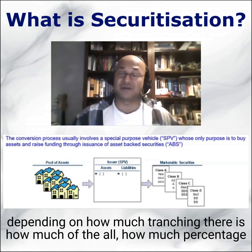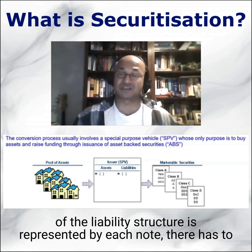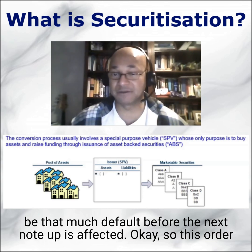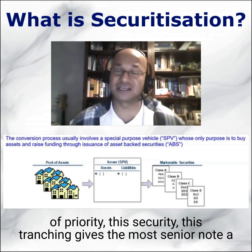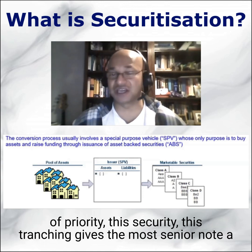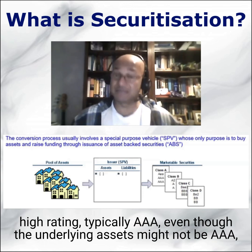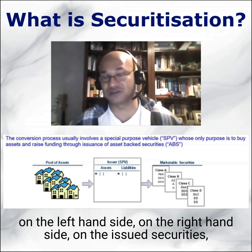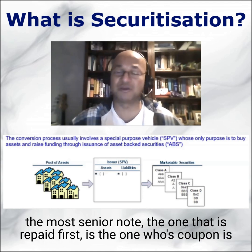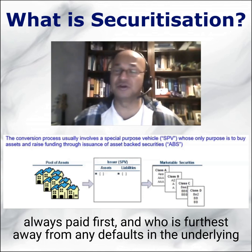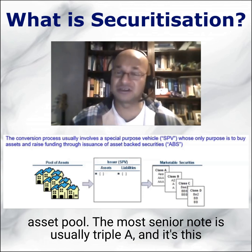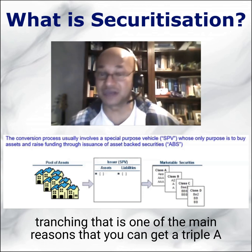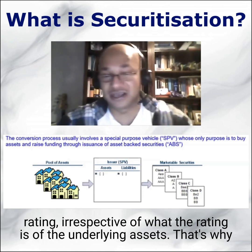Depending on how much tranching there is and what percentage of the liability structure each note represents, there has to be that much default before the next note up is affected. This order of priority and tranching gives the most senior note a high rating — typically triple-A — even though the underlying assets might not be triple-A. The most senior note, which is repaid first and furthest from defaults in the underlying asset pool, is usually rated triple-A. This tranching is one of the main reasons you can achieve a triple-A rating irrespective of the rating of the underlying assets.